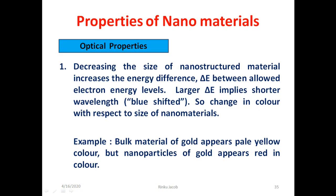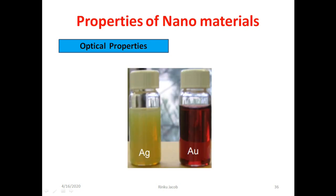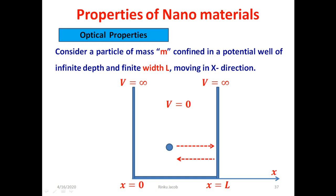Regarding optical properties, decreasing the size of a material from bulk to nano level increases the energy difference ΔE between allowed electron energy levels. A larger ΔE means a shorter wavelength of emitted light — otherwise called blue shifted. The color of nanomaterials changes with size. For example, bulk gold appears pale yellow, but gold nanoparticles appear red. The figure shows the colors of silver and gold nanoparticles. To understand why energy level separation increases when size is reduced to nanoscale, we consider a particle trapped inside an infinite square well potential from quantum mechanics.